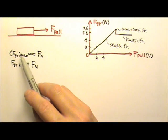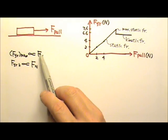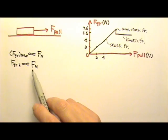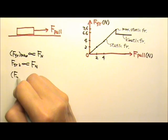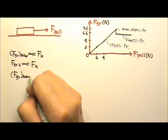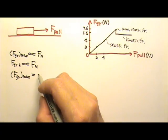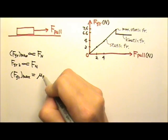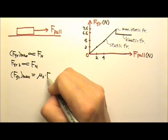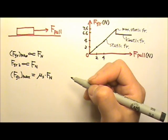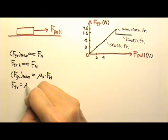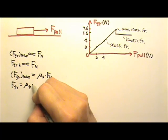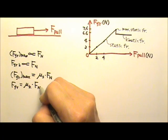Because these friction forces are proportional to the normal force, we can make them equal to the maximum static friction equal to a constant μs times the normal force. And the kinetic friction would be a constant μk times the normal force.